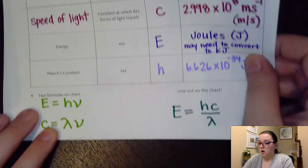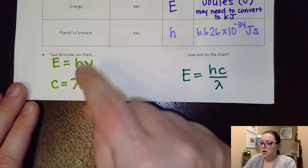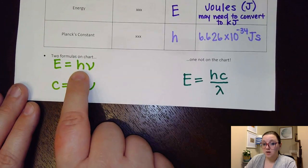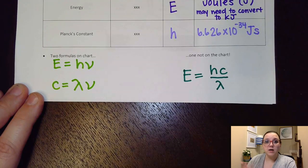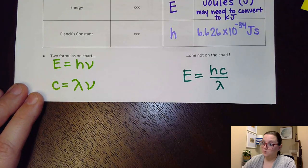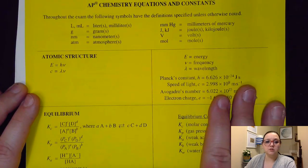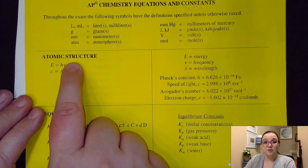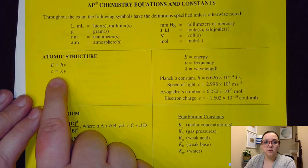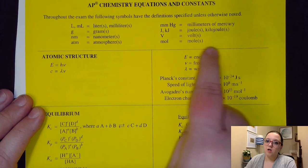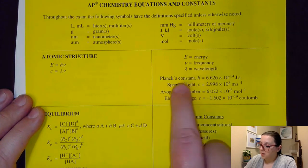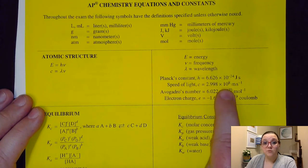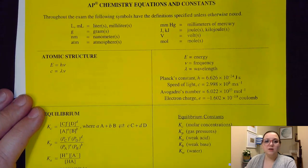There are two formulas on our formula chart: energy equals Planck's constant times frequency (E = hν), and the speed of light equals wavelength times frequency (C = λν). Depending on what variables you are using, you would use one or the other. Looking at the Atomic Structure section of the formula chart, it gives you both formulas, defines all the variables, and provides the values of Planck's constant and speed of light — so you don't have to remember those, you just need to know how to apply them.